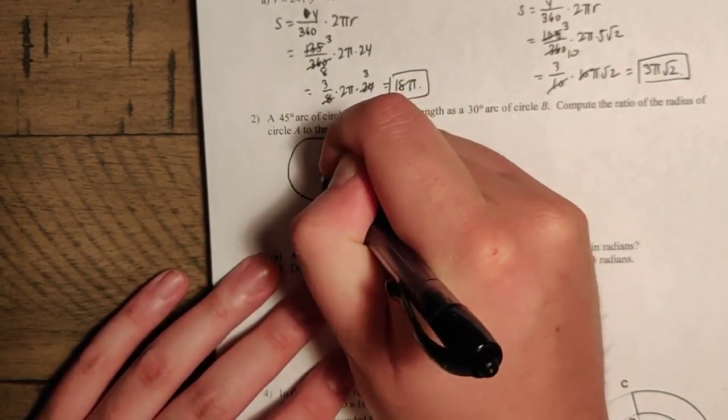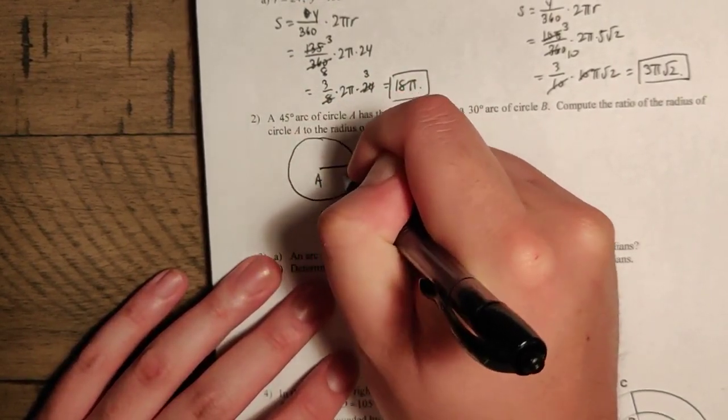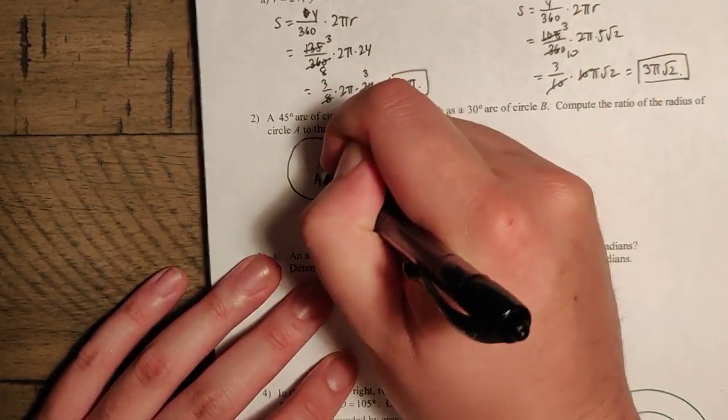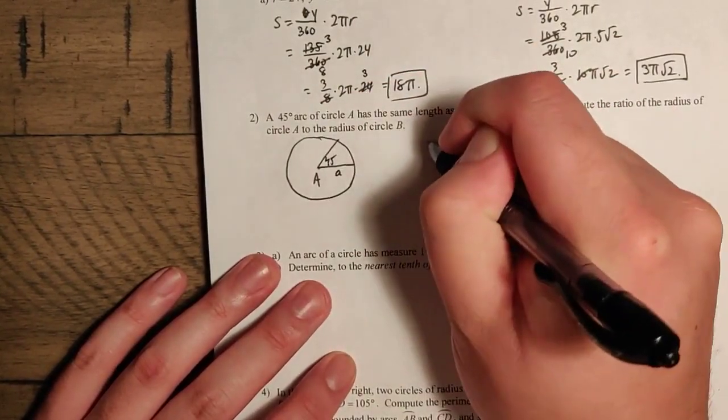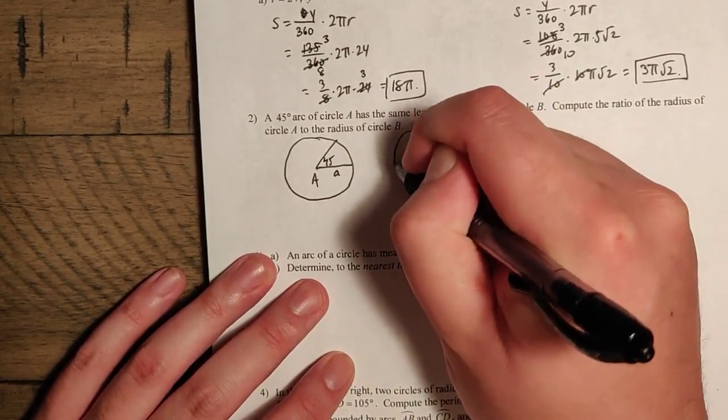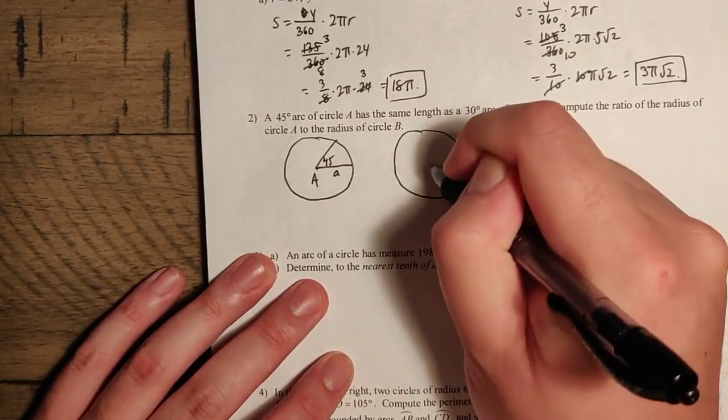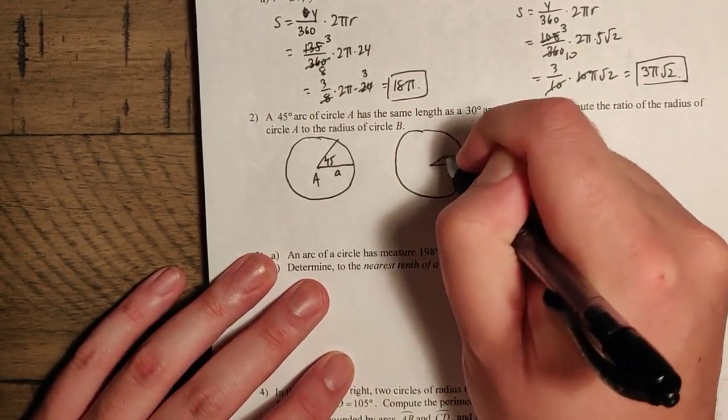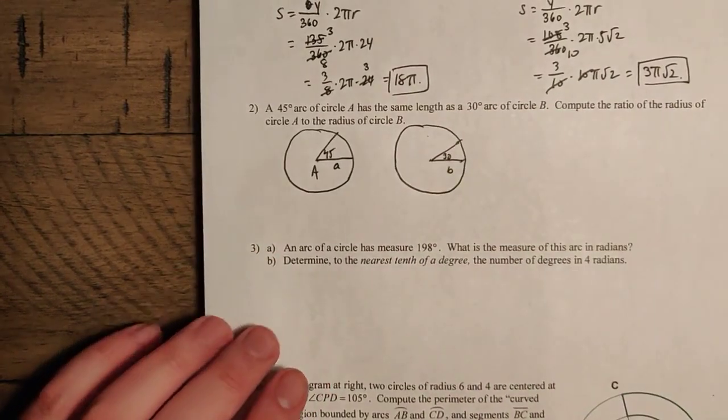So we have a circle like this, A, and I want to call its radius lowercase a. And this is a 45 degree arc. And we have a second circle here, B. Here's B, and here's a 30 degree arc. And we're going to show that these are the same length.